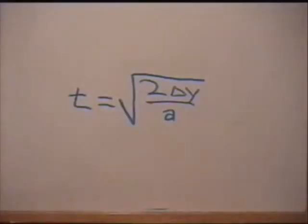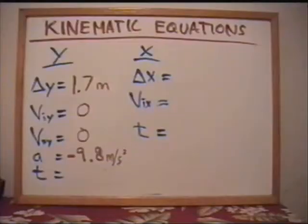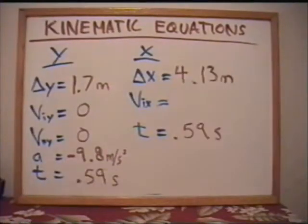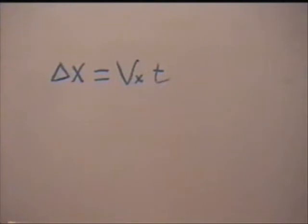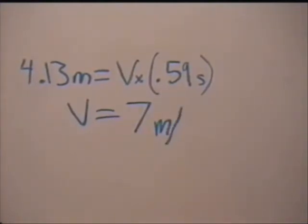We can then plug this into the time equation, along with acceleration, to find the time: 0.59 seconds. And also, the distance was 4.13 meters. Now plug it into the equation: 4.13 meters equals Vx times 0.59 seconds. V equals 7 meters per second.